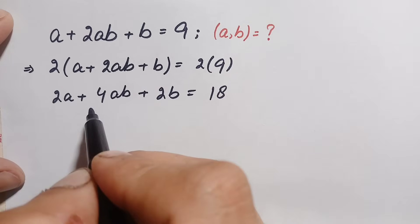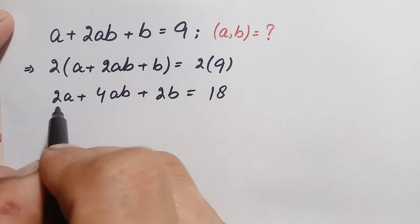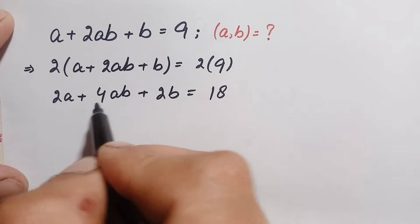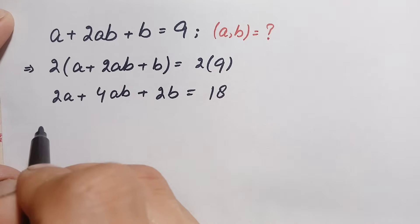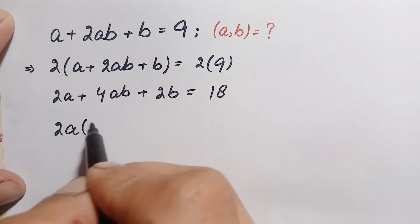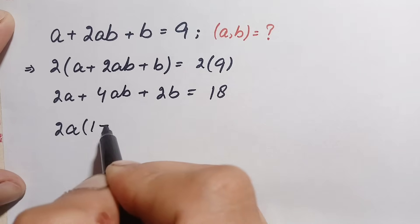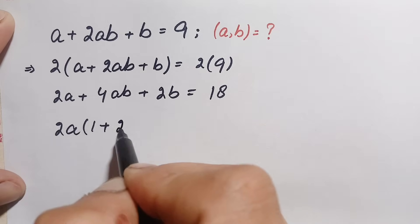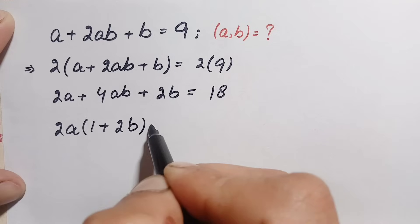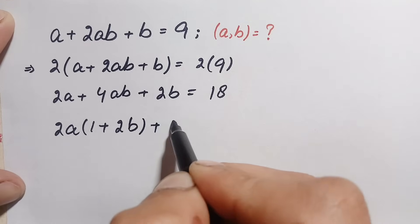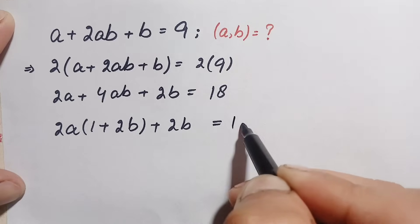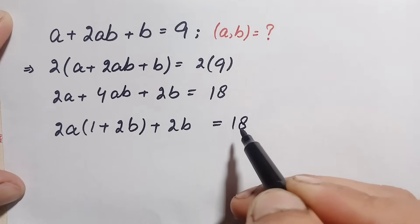Now look at these two terms. Here in these two terms, 2a is common. So we will take out 2a as a common factor from the first two terms. So this will become 2a times (1 + 2b), plus 2b, equal to 18.